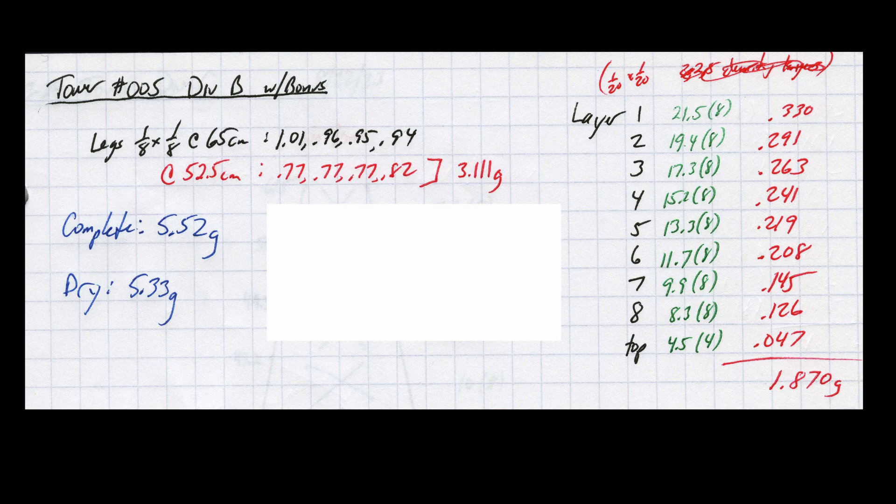Compared to the previous build, I reduced the total leg mass by about 14% and the crossmember mass by just over 21%. The final dry mass was 5.33 grams. If this tower holds the entire 15 kilograms, it would score 3752 and would easily beat the actual efficiency of the benchmark tower. Fingers crossed!